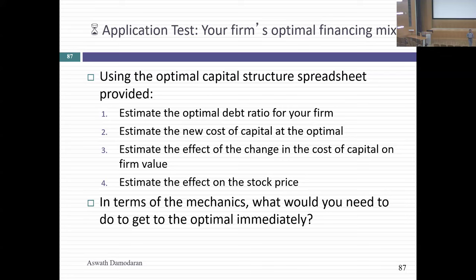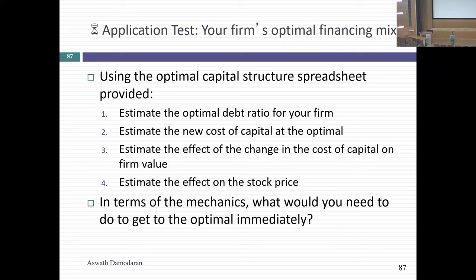Anybody else have a chance to do their optimal debt ratio? Debt to cap — okay, seven percent, including leases. If you told me you were at 17 and the optimal is 20, my conclusion is you're pretty close to your optimal, because 20 would be at seven. It looks like they're under-levered. They're a brick-and-mortar retail company — one of the success stories among brick-and-mortar retailing — but you don't want to put that at risk.